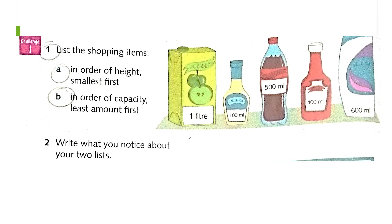So list 100 milliliters first, then 400 milliliters. After that comes the one-liter juice. The coke bottle and the hair shampoo are at the same height, so you can write either one first. The full order is: 100 mL, 400 mL, 1 liter, 500 mL, 600 mL — or 600 mL before 500 mL. That is according to height.